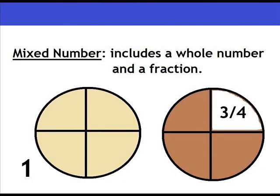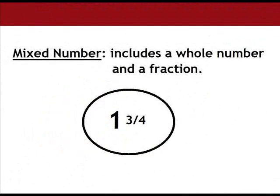Mixed number. A mixed number includes a whole number and a fraction. For example, one whole and three fourths equals one and three fourths.